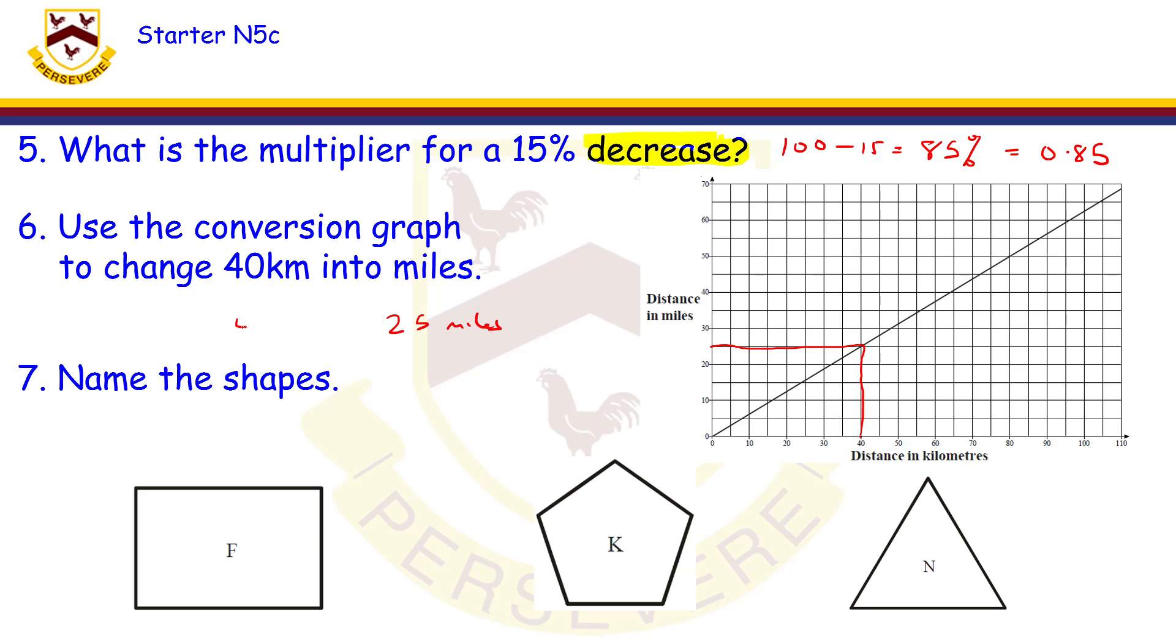Name the shapes. Straightforward. It's a rectangle. One, two, three, four, five sides, pentagon. And all the sides are equal in this triangle, so equilateral triangle.